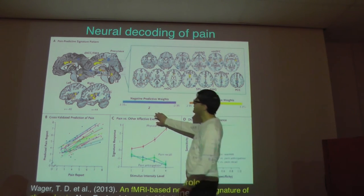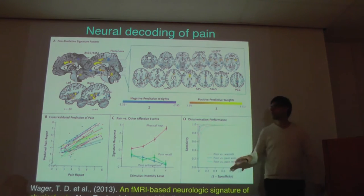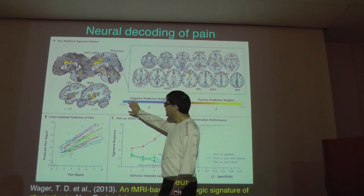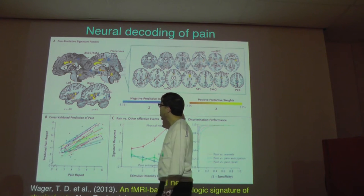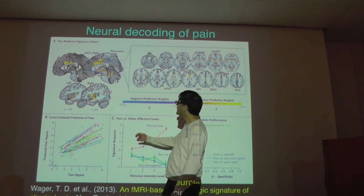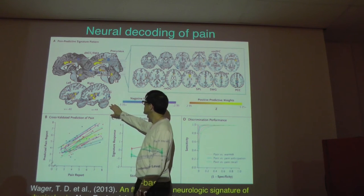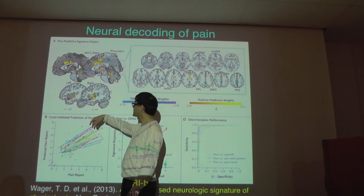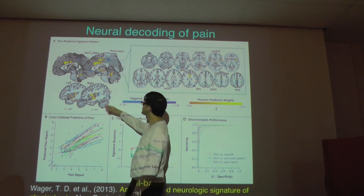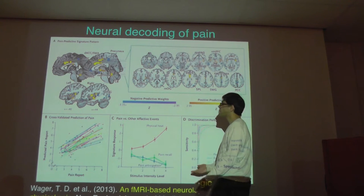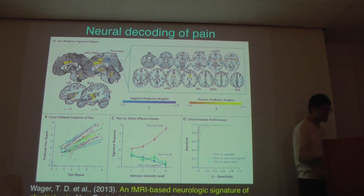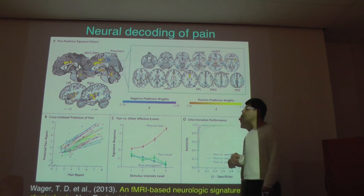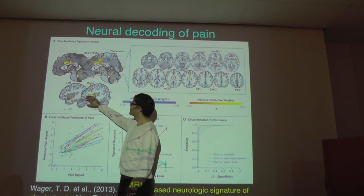So this top part is amazing. They exposed people to different levels of pain, measured their brain activation, and trained a classifier — in this case a regression, meaning you're trying to fit a continuous function. They assigned weights to different voxels: positive weights meaning more activation in that voxel corresponds to more pain, and negative weights meaning more activation corresponds to less pain.